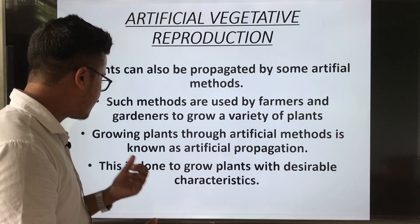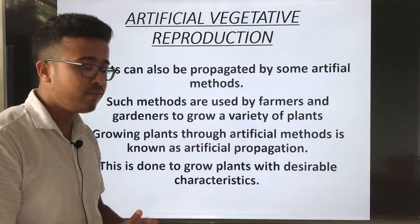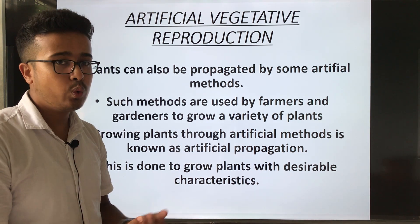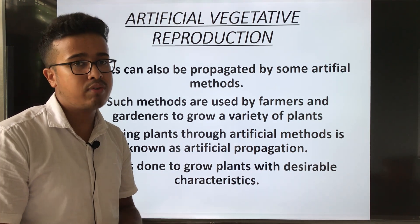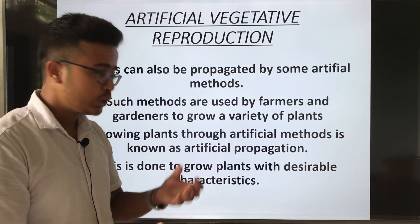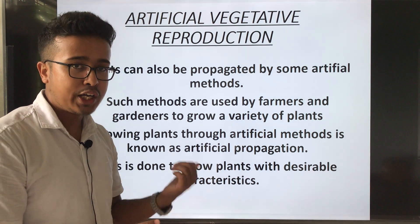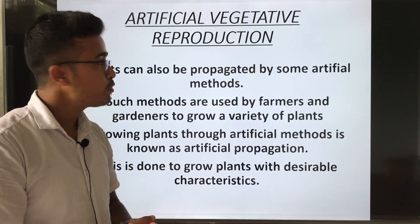Artificial propagation is done to grow plants with desirable characters — for example, the colors of the flower. That process is done by artificial propagation.